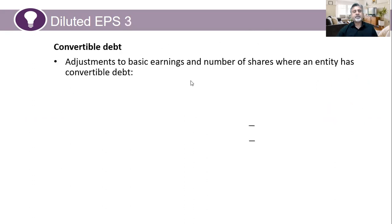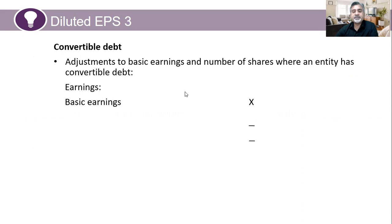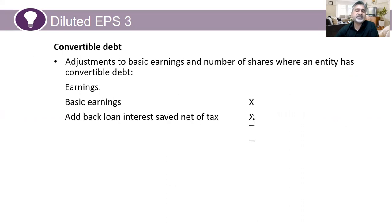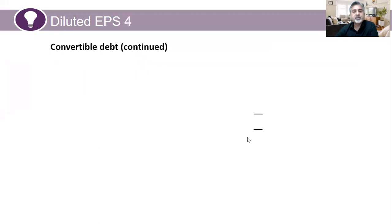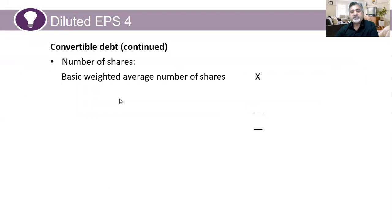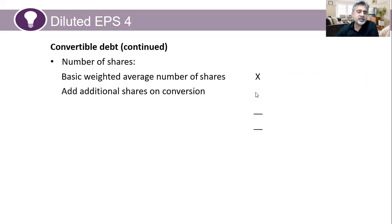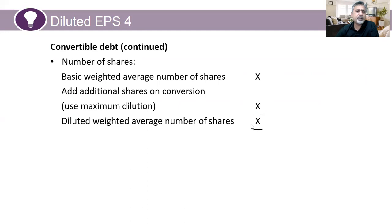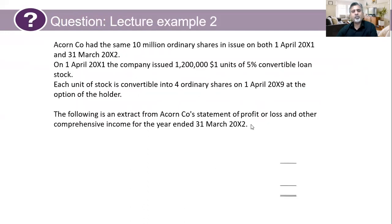For convertible debt, the adjustment to basic earnings and number of shares works as follows: earnings = basic earnings plus add back loan interest (e.g., 400 + 60,000 = 460,000). For the number of shares, basic weighted average of 200,000 plus additional shares on conversion of 60,000 gives a new total number of shares. Let's work through a question to apply this.